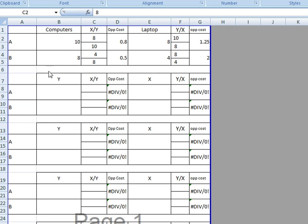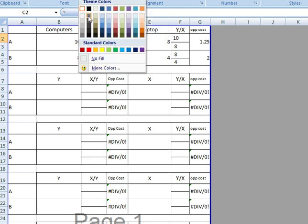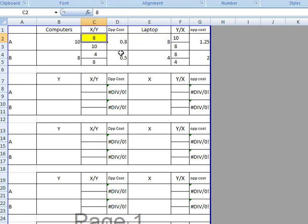Let me pick a color here. They have the comparative advantage since one-half is less than 0.8, because they're giving up less laptops to produce one extra desktop. That means the opportunity cost is lower.